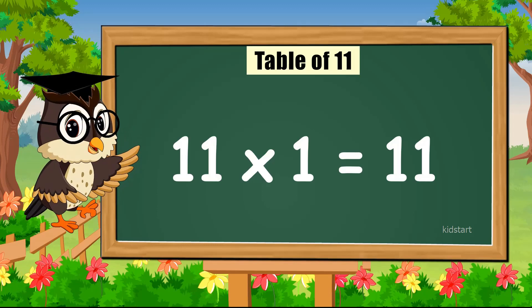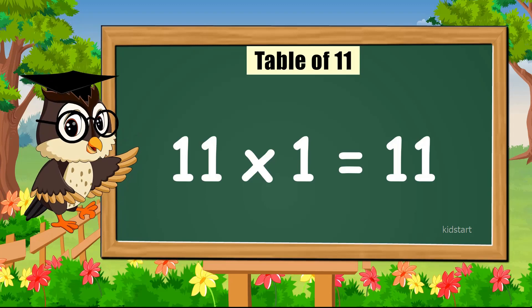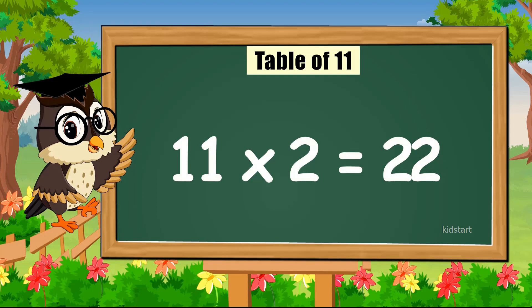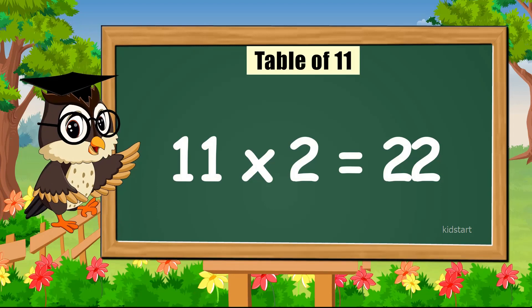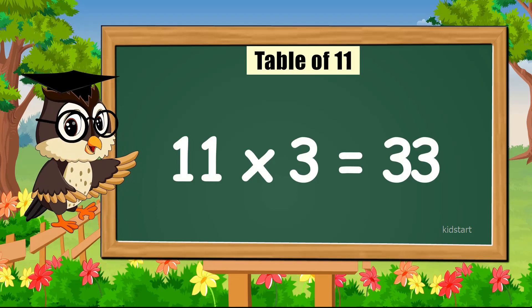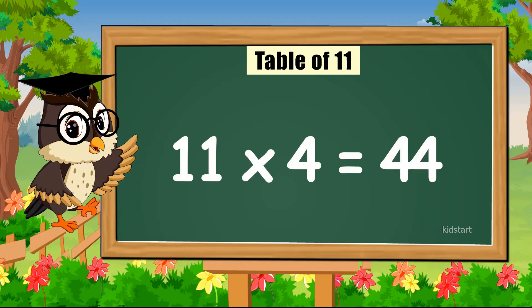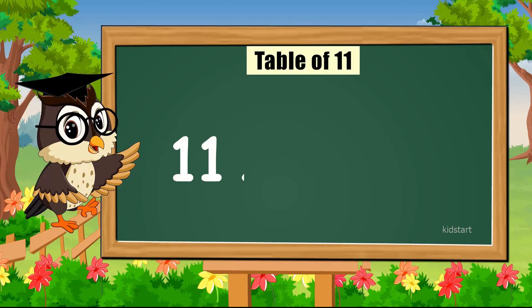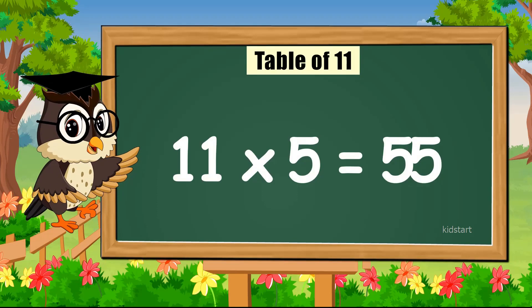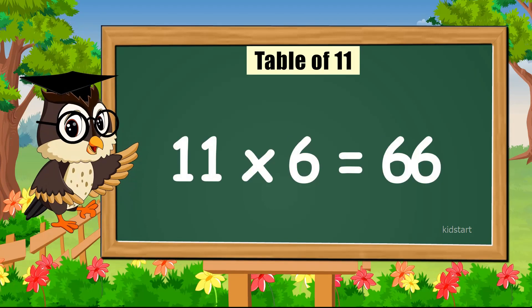Come on! Eleven times one is eleven. Eleven times two is twenty-two. Eleven times three is thirty-three. Eleven times four is forty-four.